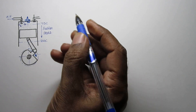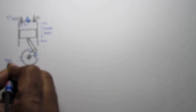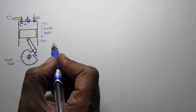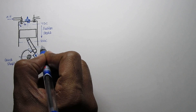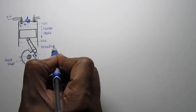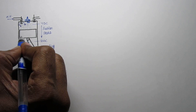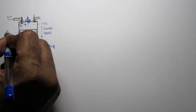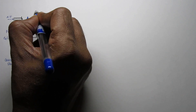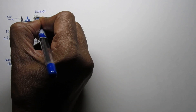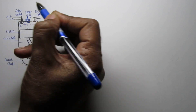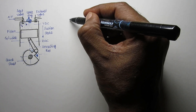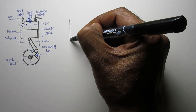Label the other parts: crankshaft, then connecting rod. Now for the second stroke — the compression stroke. During drawing, take a precaution that the cylinder dimensions must be the same as drawn before.